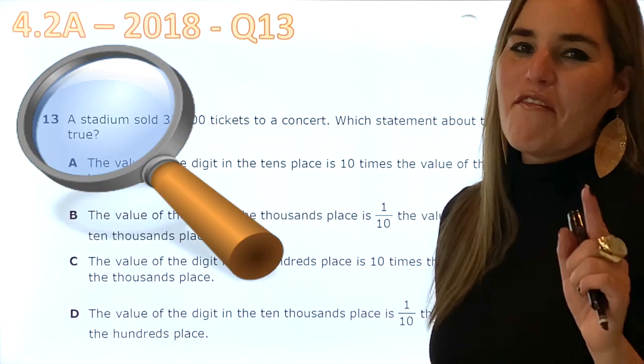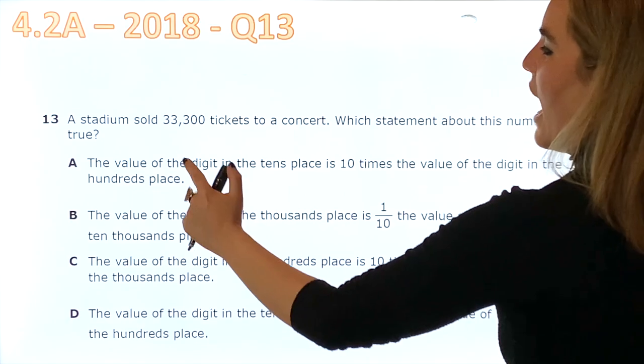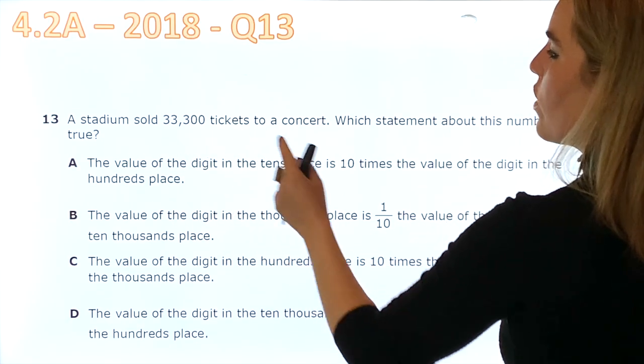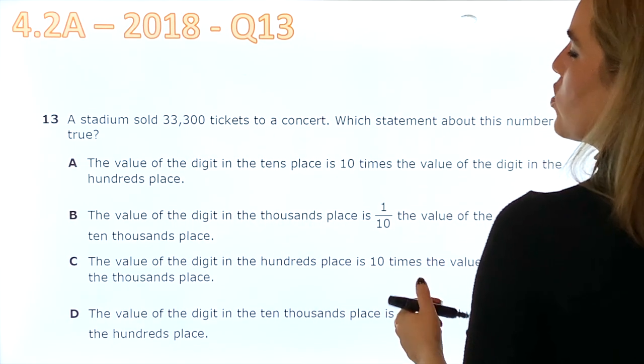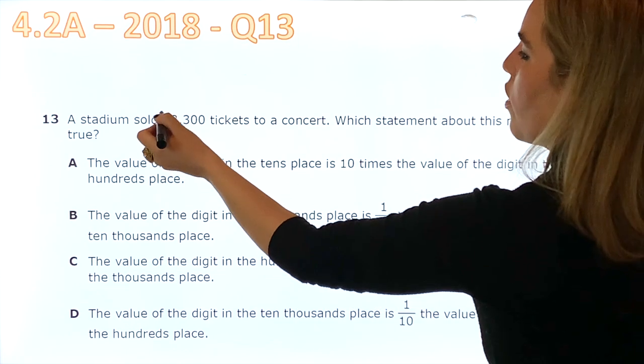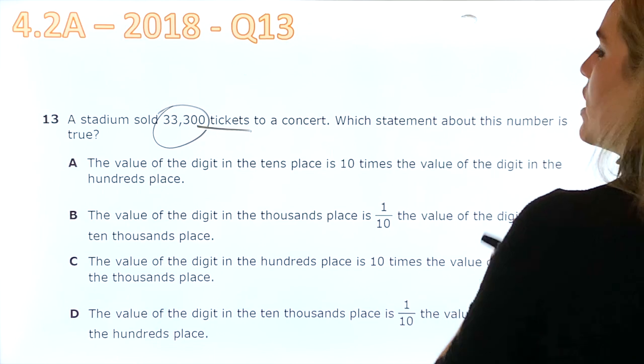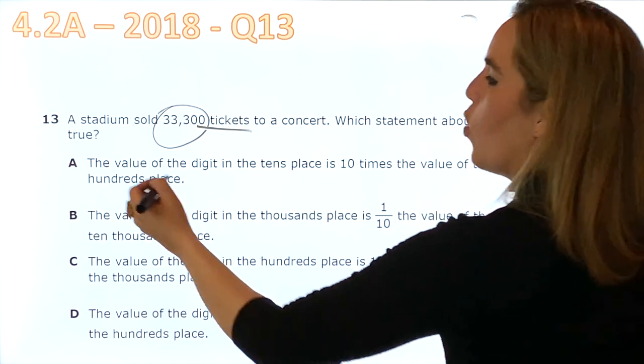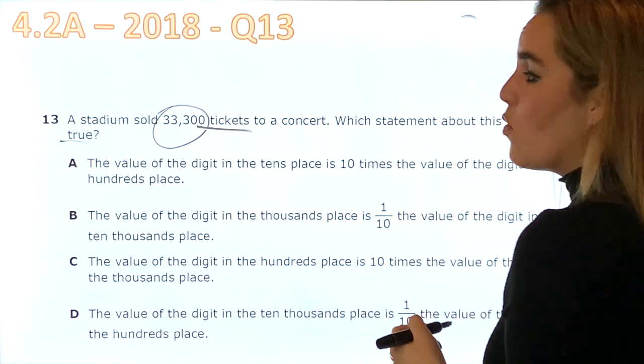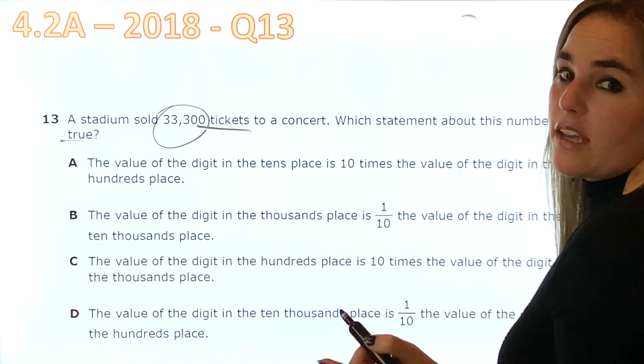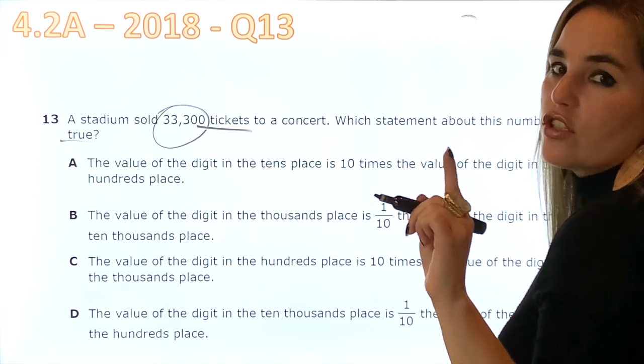Step 1, find the keywords. A stadium sold 33,300 tickets to a concert. Well, this number is important and they're tickets. Which statement about this number is true? Well, true is another keyword because sometimes they're asking for something that is not true.